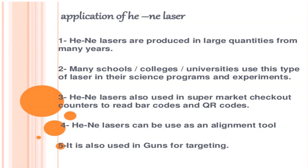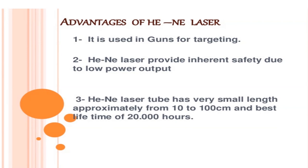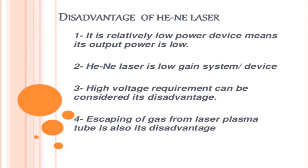The applications of the helium neon laser: they have been produced in large quantities for many years. Many schools, colleges, and universities use this type of laser in their science programs and experiments. Helium neon lasers are also used in supermarket checkout counters to read barcodes and QR codes. They can be used as an alignment tool and are also used in guns for targeting. These lasers provide inherent safety due to their low power output, and the laser tube has a very small length of approximately 10 to 100 centimeters with a very good lifetime.